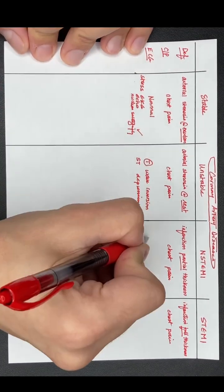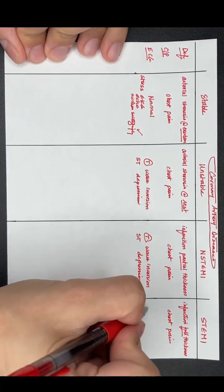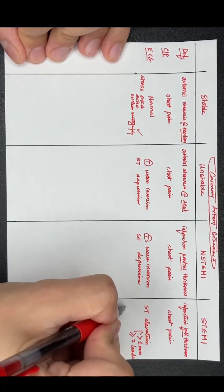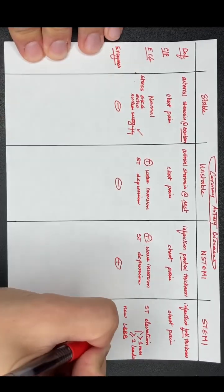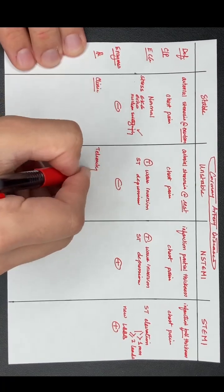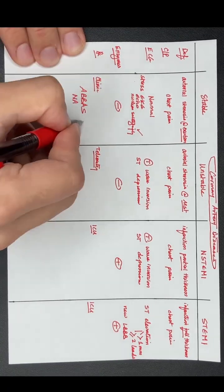They all have the same chest pain, but stable angina has a normal ECG, so your next best step is going to be a stress test. The unstable angina and non-STEMI have the same ECG changes, so your next best step is going to be cardiac enzymes.